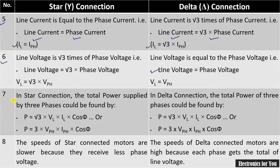Next, let us talk about power. Power supplied by star connection is given by P = √3 × VL × IL × cosφ — this is power expressed in line quantities. If expressed in phase quantities, P = 3 × Vph × Iph × cosφ. The same formula applies for delta connection, so power in star connection and delta connection remains the same.